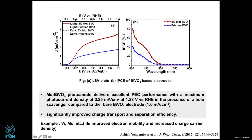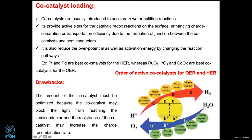If you look at the incident photon conversion efficiency, the majority of conversion is essentially taking place at less than 500 nanometers — part of the energy is wasted. If you shift the absorption cross section towards the more visible or near-infrared region, one can expect improvement in efficiency. That's where co-catalyst loading comes in. Co-catalyst loading accelerates the water splitting reaction by providing active sites for redox reactions and reducing the overpotential. For example, 1.23 V is the theoretical minimum, but water doesn't split unless you supply 1.48–1.49 V; the co-catalyst decreases the oxygen overpotential.